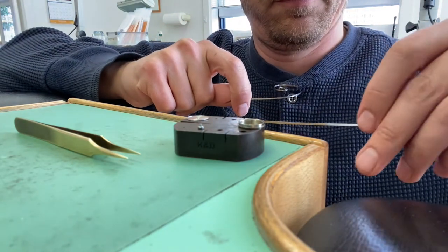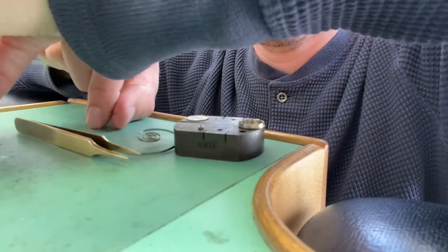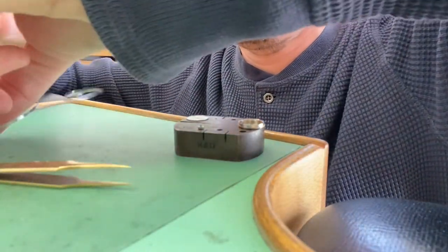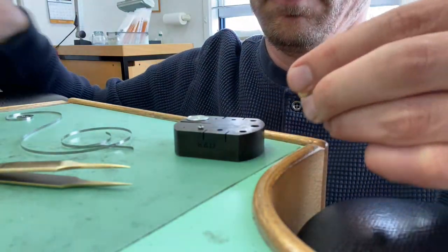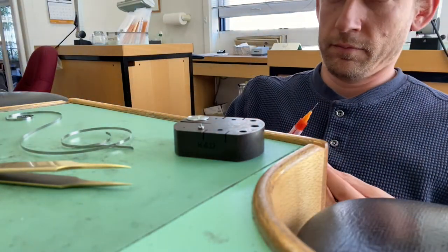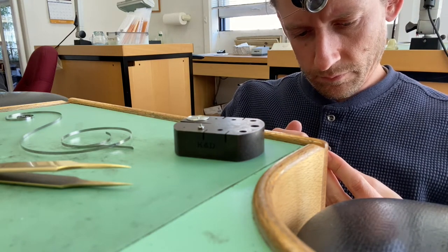Now what you're gonna do is pull out the tail of the mainspring. You're gonna have to flip that around in order to install it, but first you got to put the breaking grease inside the barrel wall.